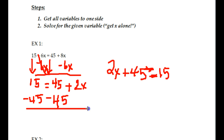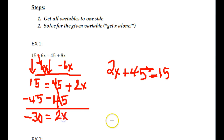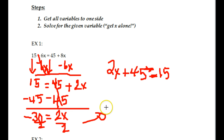Subtract 45 from both sides. We're going to simplify: 15 minus 45 is negative 30. The 45s cancel out, and we're left with 2x. How do you get rid of a 2x? With multiplication, you divide. So we're going to divide both sides by 2. Negative 30 divided by 2 is negative 15, and that's what x equals.